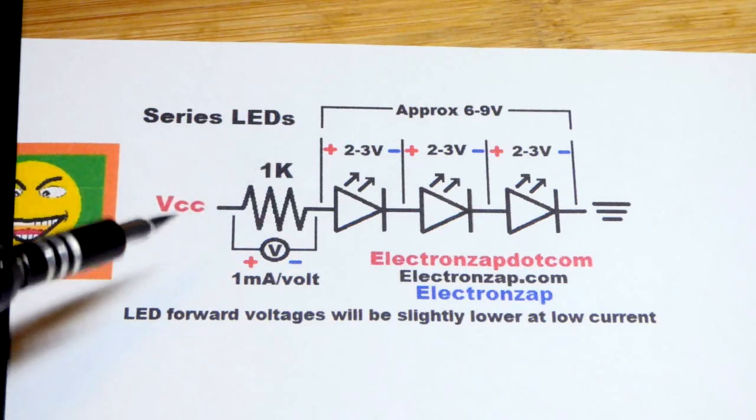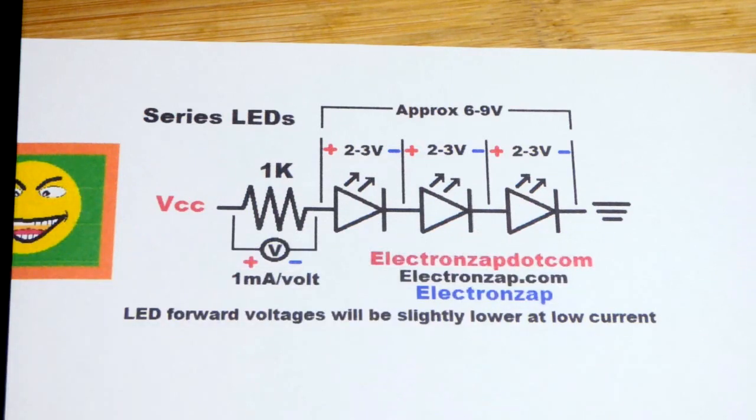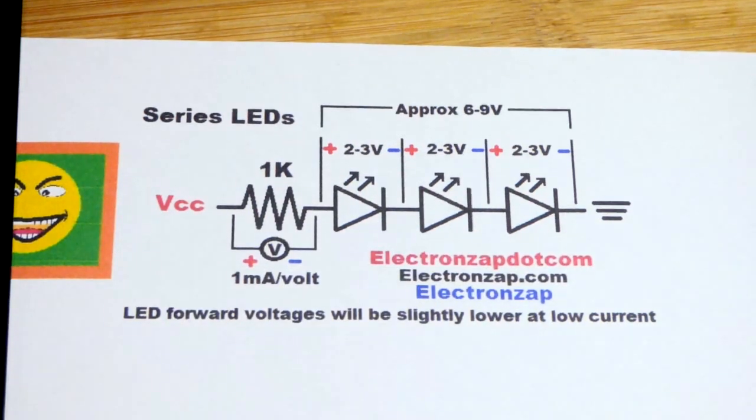...then for each volt across the resistor, you'll have 1 milliamp of current flowing through the LEDs.